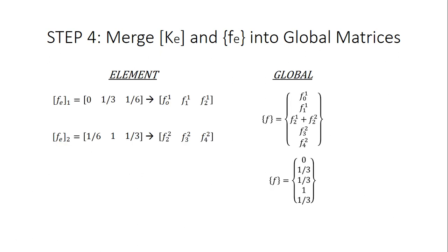We do the same thing for the F matrix. Element 1 contributes f0, f1, f2 and element 2 contributes f2, f3, f4. The shared common node between the two elements is added together when assembling the global F matrix. Plugging in all the numbers gives us the final global F matrix.